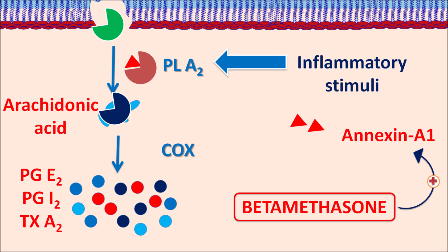Similarly, betamethasone can also directly inhibit the COX pathway, thereby inhibiting the synthesis of prostaglandins. By all of these actions, betamethasone reduces the inflammatory response and can be used in the treatment of various inflammatory disorders.